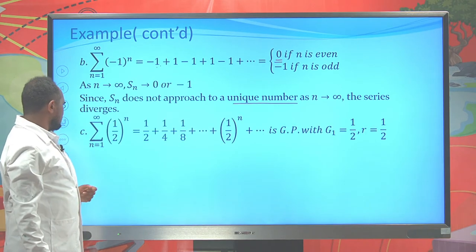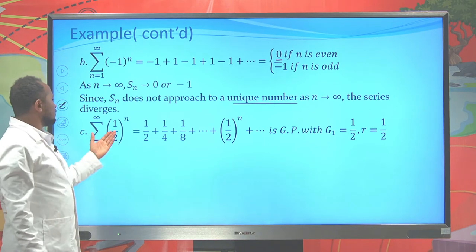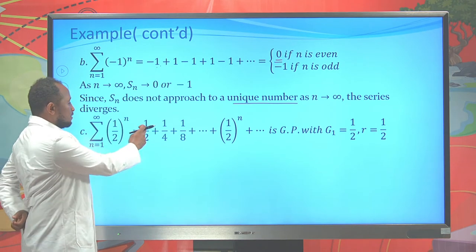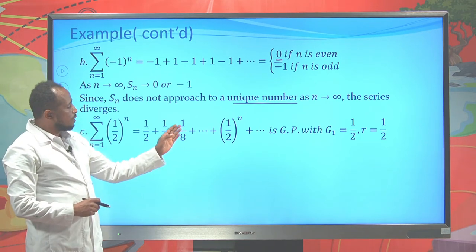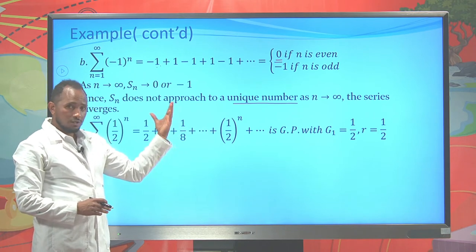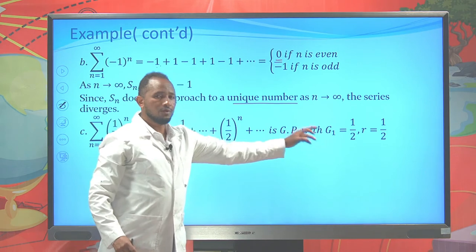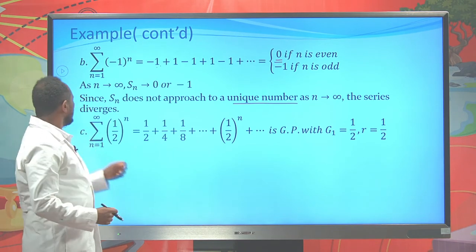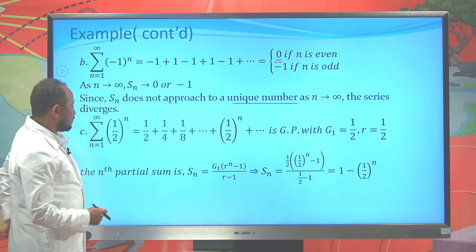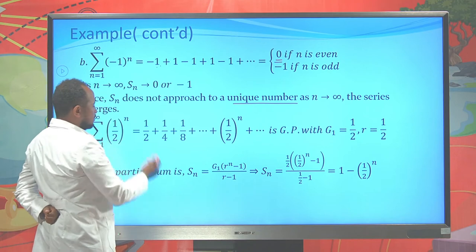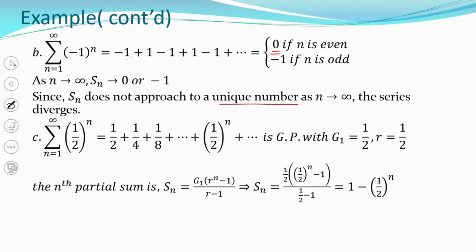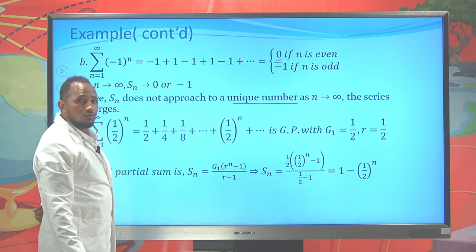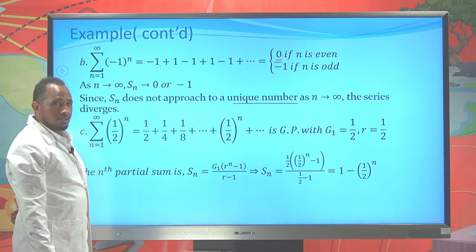Third example: the sum of (1/2)^n where n starts from 1 to infinity. This equals 1/2 + 1/4 + 1/8 + ... It is a geometric sequence with first term 1/2 and common ratio 1/2. The nth partial sum is S_n = 1 − (1/2)^n.